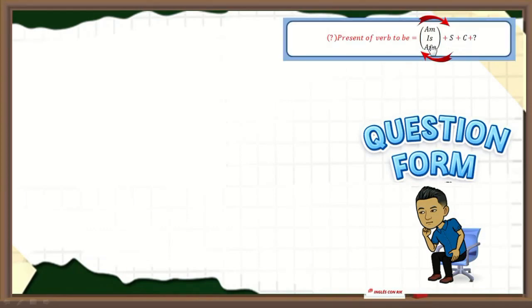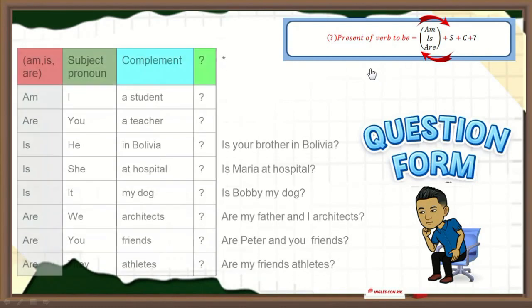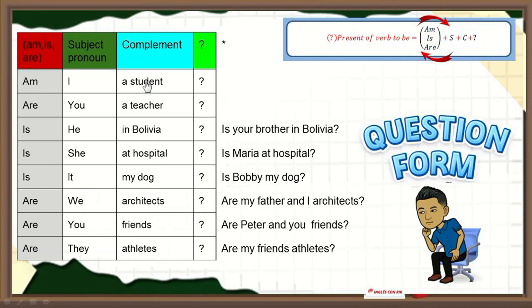Continuamos con las question forms. Para hacer preguntas en inglés debemos ubicar en primer lugar el verbo to be — am, is, are — luego el sujeto, luego el complemento, y nunca se olviden del signo de interrogación. En inglés solo se utiliza al final de la oración. Am I a student? En este caso la pronunciación de am va a cambiar. Solo en primera persona singular sucede este fenómeno: I am a student, pero en pregunta: Am I a student?